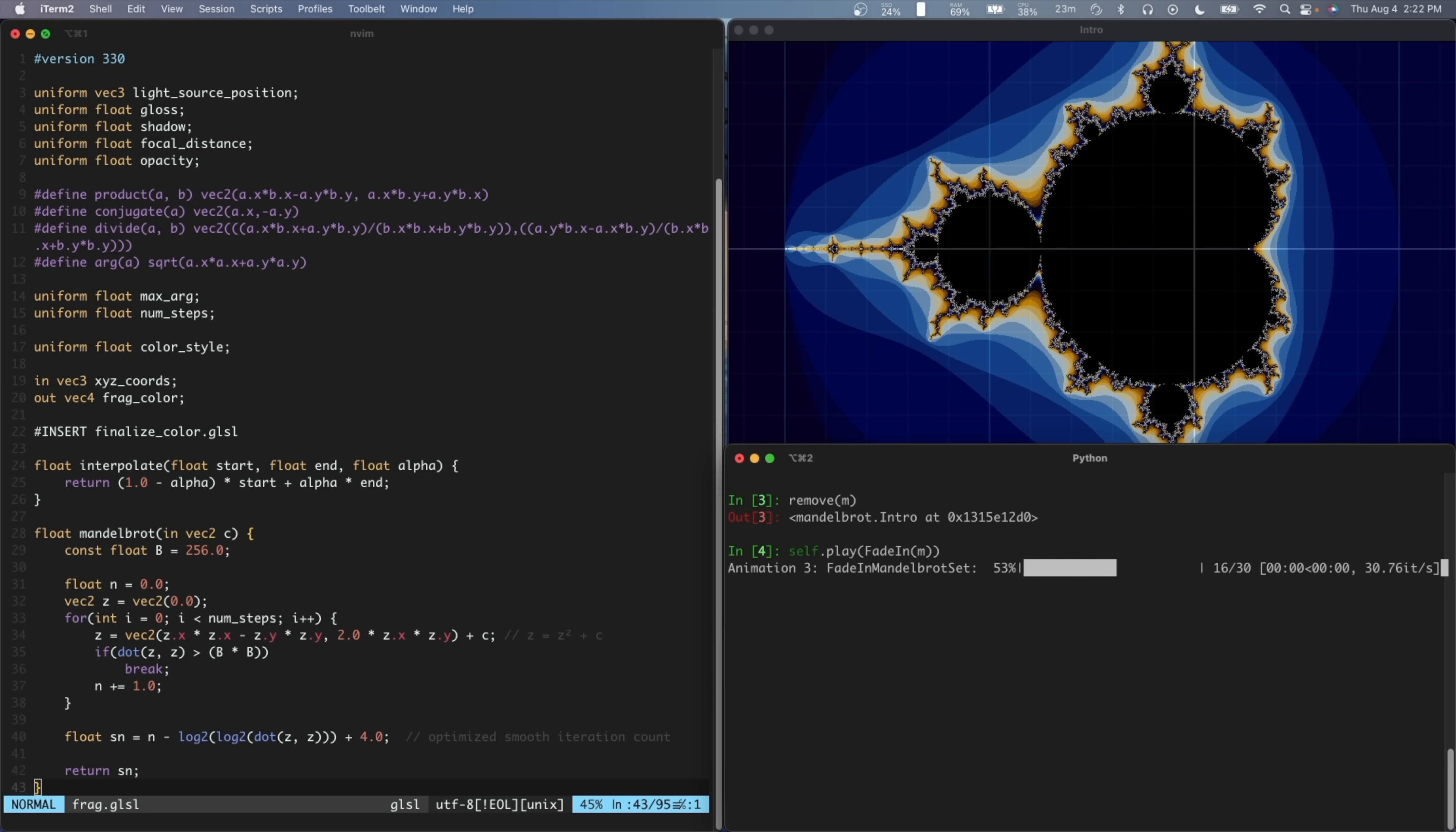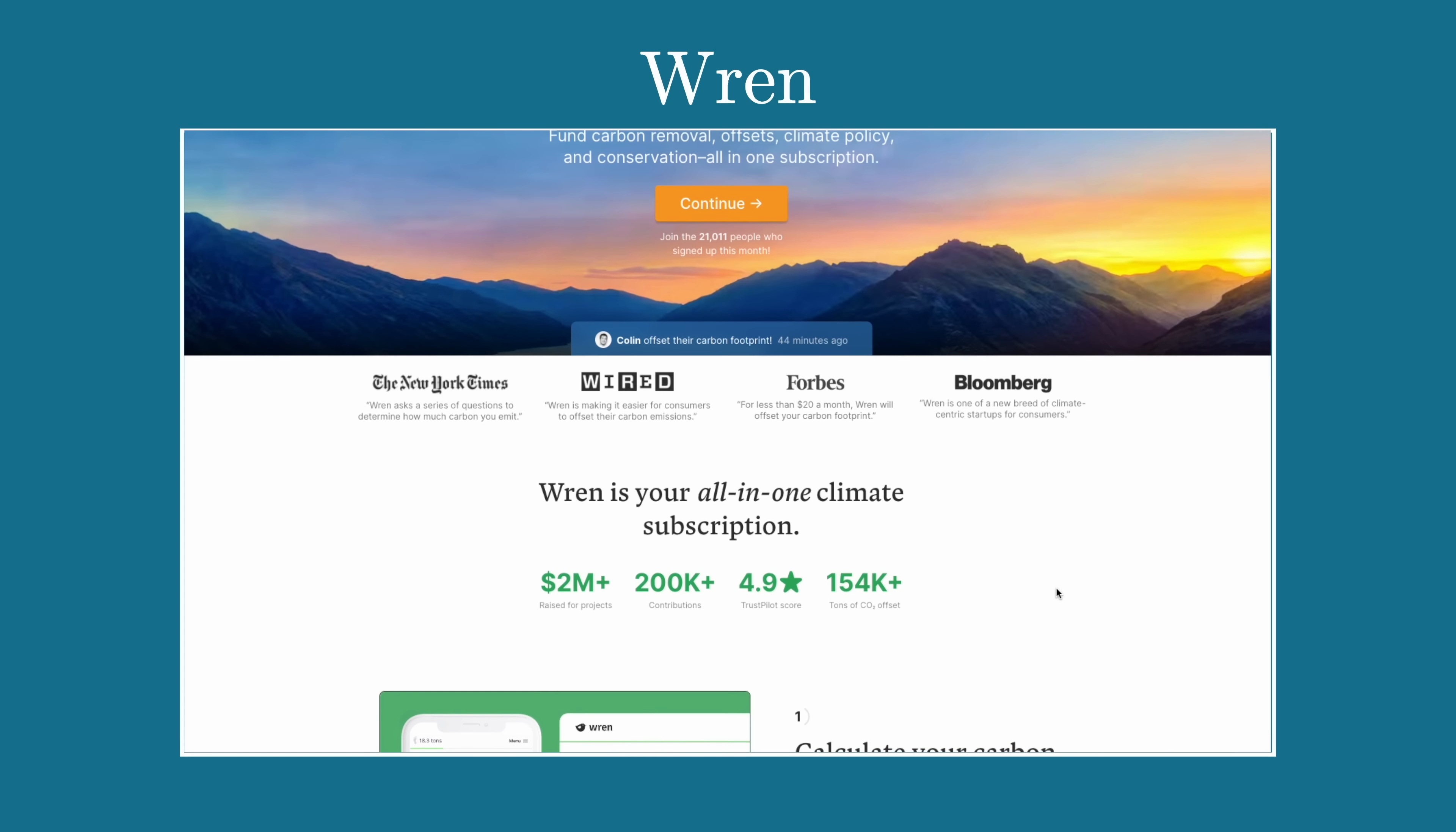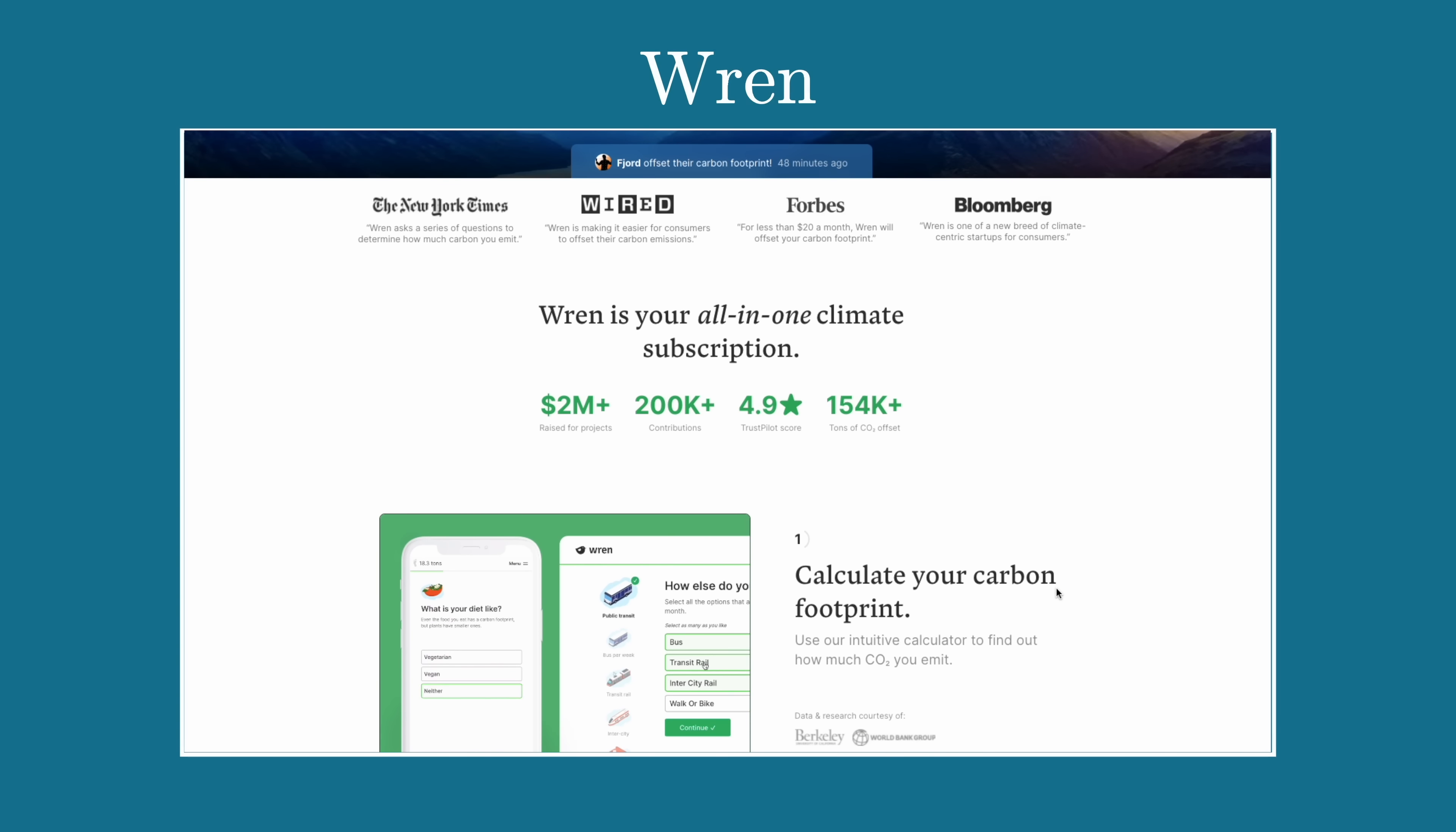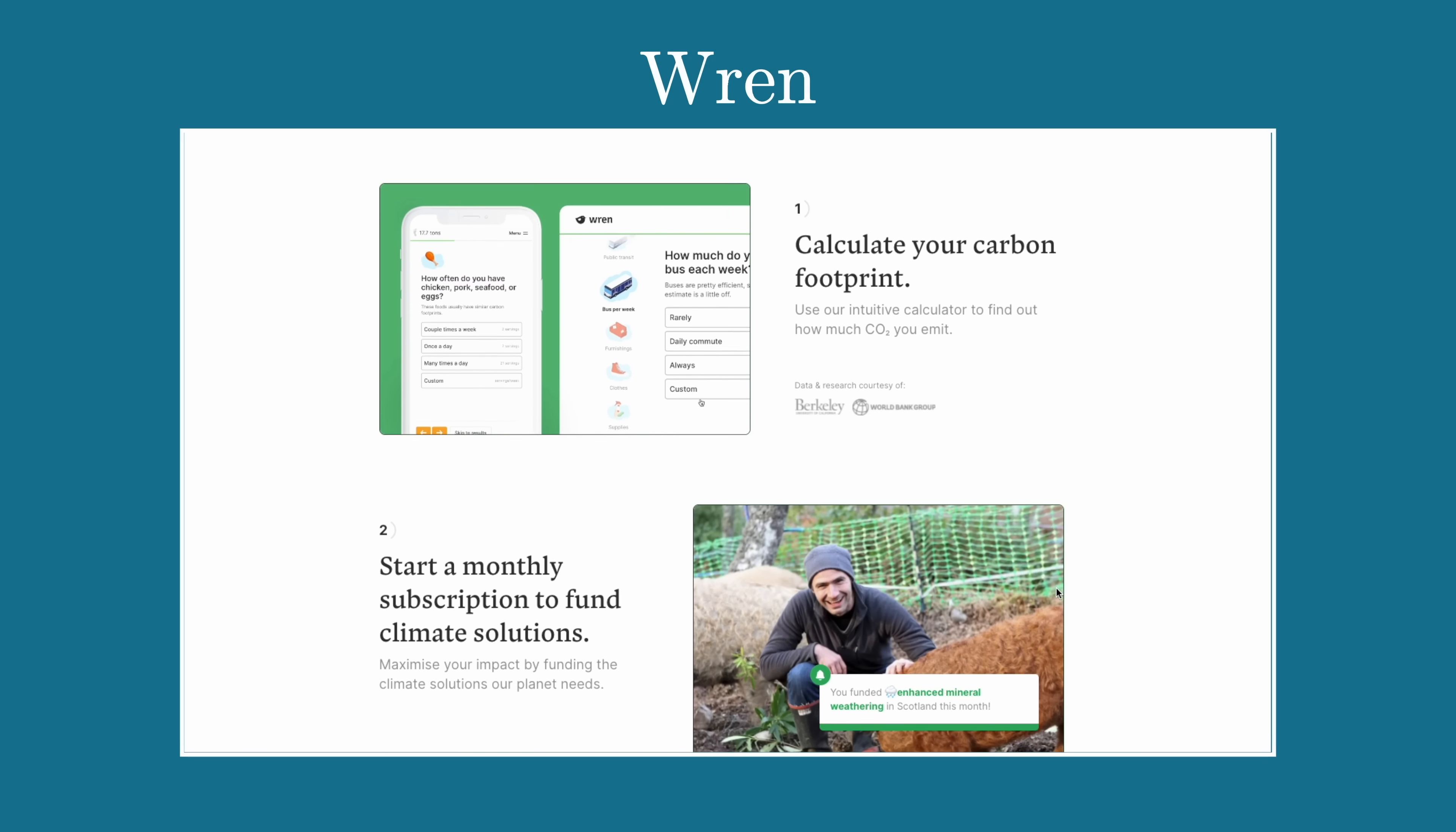I believe that small things like this really do add up on helping climate change, which takes me to today's sponsor, Wren. Wren is a simple way to do your part. You start by calculating your carbon footprint and answering a few questions about your lifestyle. Then, you can offset your carbon footprint by making a monthly contribution to fund various projects.